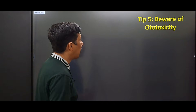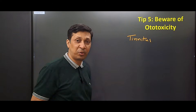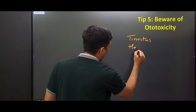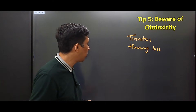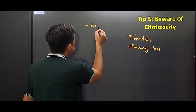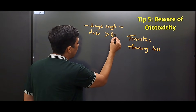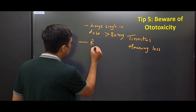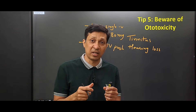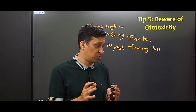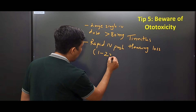The fifth important tip is to always be aware of ototoxicity. This generally starts with tinnitus — a ringing sound in the ear — and there can also be hearing loss, which is generally reversible if detected early. Ototoxicity occurs when you give a large single IV dose, generally more than 80 mg. The risk also increases when you give the drug as a rapid IV push, so always give it over one to two minutes.